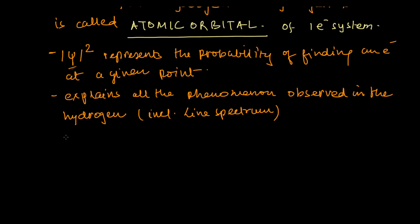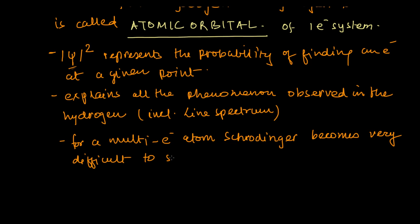Now we come to the thing that for a multi-electron atom, Schrödinger equation becomes very complex to solve, very difficult to solve. So we had to take the help of approximate methods.